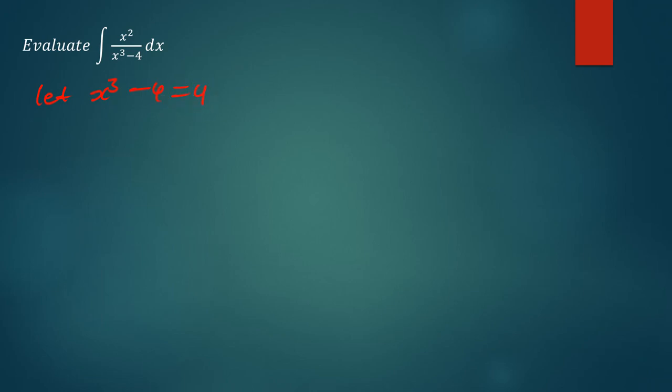Why have I done this? Because I know when I differentiate this function, I'm going to get a function that is going to contain x to the power 3, rather x to the power 2. So let me write it properly. I'm going to say let u be equal to x to the power 3 minus 4.